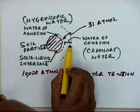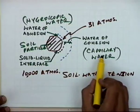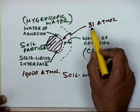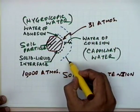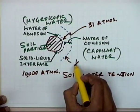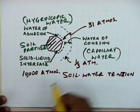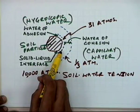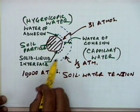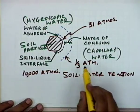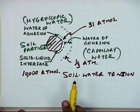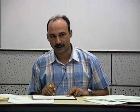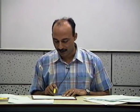The tension increases as we go closer to the soil particle, and to extract moisture closer to the particle, the root system has to apply more and more force. In the capillary layer, the tension varies from 31 atmospheres at the inner portion to one-third atmosphere at the outermost part. In terms of equilibrium points — wilting point, field capacity, and saturation level — you can define those points here.